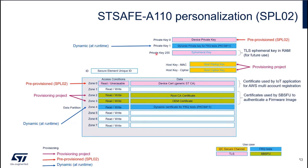For test purposes, when running the Amazon certification, we also use private key slot 1 and the dynamic certificate in zone 4. The TLS ephemeral key is not used today — this is something that may be used in the future, but at the moment it's not something we use.